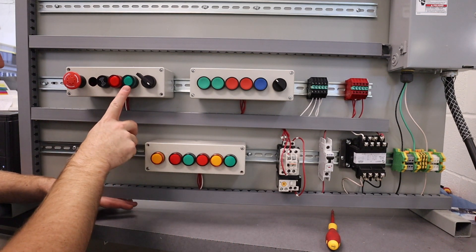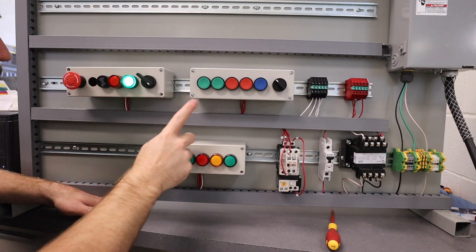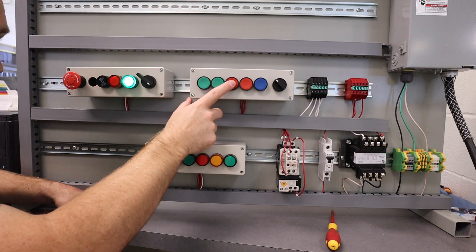The permission switch we'll be using is this green one right here. When I press it, notice that it illuminates, and when I go and press my start button, it pulls in the contact.